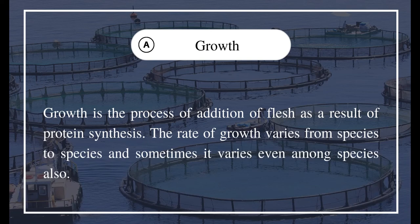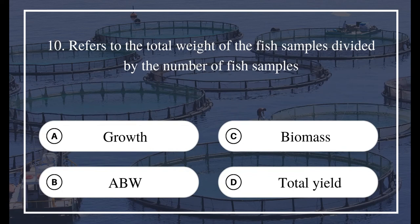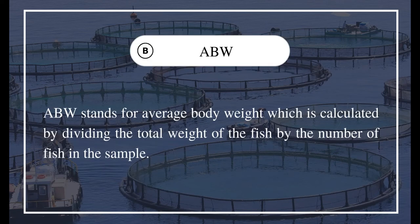Question 10: Refers to the total weight of fish samples divided by the number of fish samples — A) Growth, B) ABW, C) Biomass, D) Total yield. The answer is B) ABW. ABW stands for Average Body Weight, which is calculated by dividing the total weight of the fish by the number of fish in the sample.